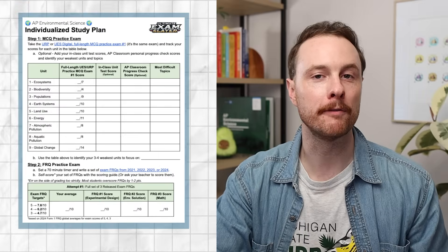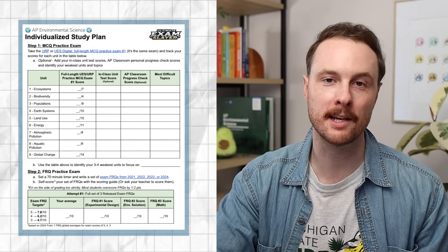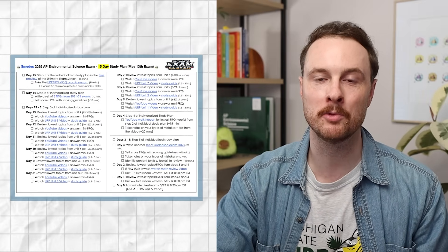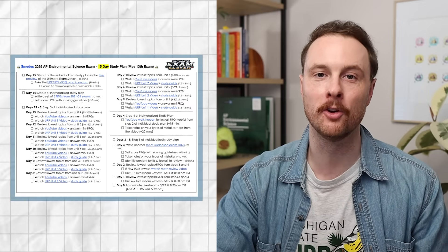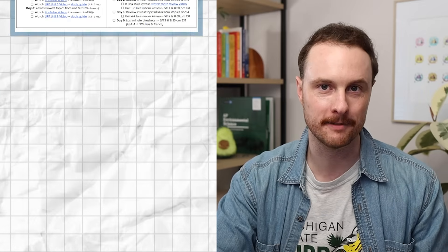If you want a series of videos that walks you through exactly how to answer each of the three different types of FRQs on the exam, check out the 'How to Write AP Environmental Science Exam FRQs' playlist linked in the upper right corner of the screen and in the video description below. That's your complete rundown of the 2025 Digital AP Environmental Science Exam. If you want a free copy of the individualized study plan and the two-week pacing guide, click the link in the description to sign up for a free preview of the Ultimate Review Packet or the Ultimate Exam Slayer.